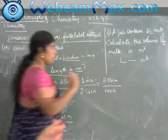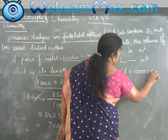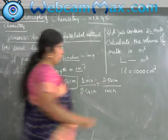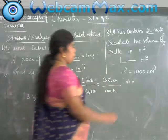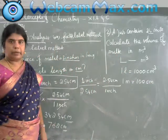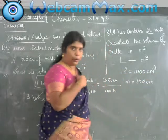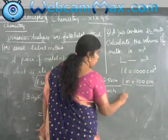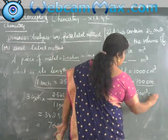Now, 1 liter is equal to 1000 centimeter cube. Also, 1 meter is equal to 100 centimeters. Since we want to convert into cube, I am going to apply the cube: 1 meter cube is equal to 100 cubed into centimeter cube.